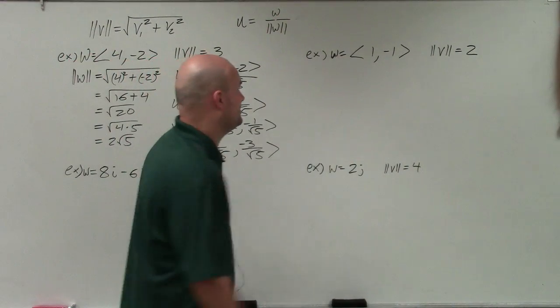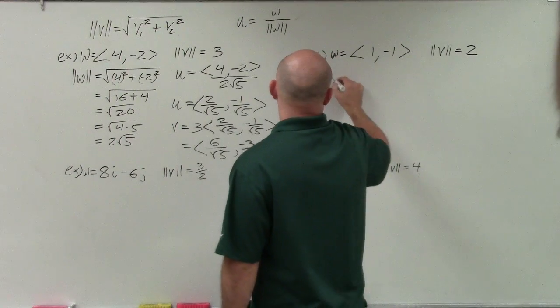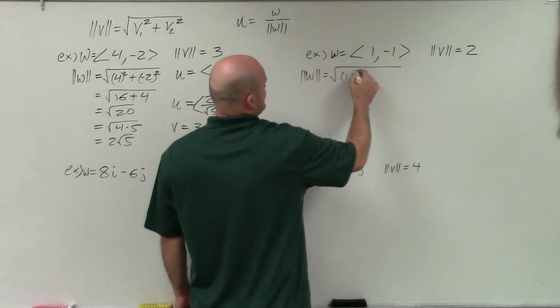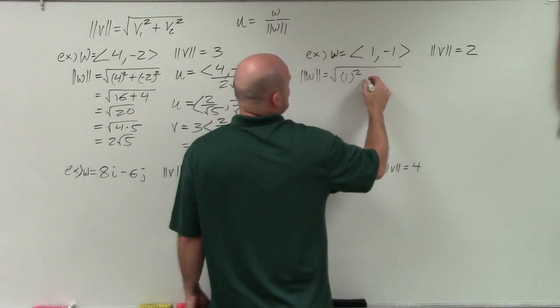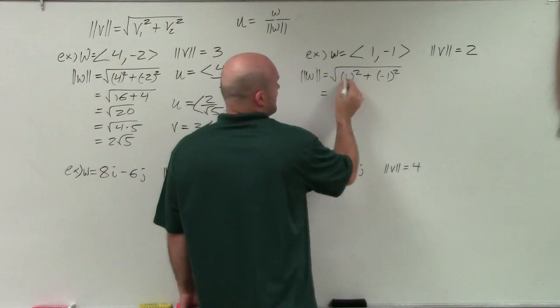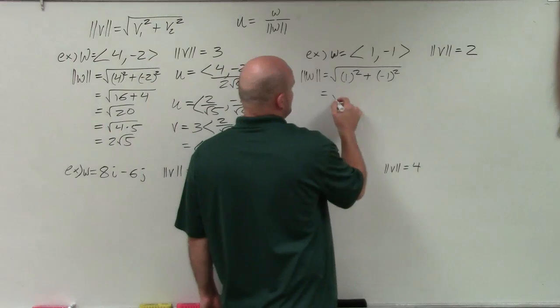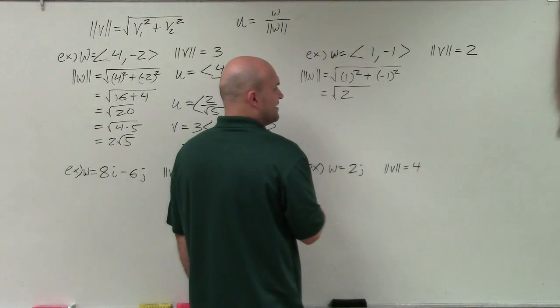OK, so in this next example, again, we want to find the unit vector. So to do that, I'm going to first find the magnitude. So square my first component plus squaring my second component, and 1 squared is 1 plus negative 1 squared is 1. So that's going to be square root of 2.